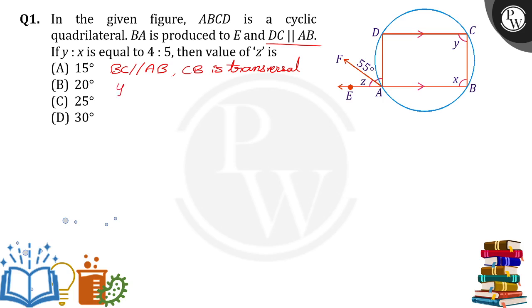So what can we say? Y plus X equals 180 degrees because they are co-interior angles. Here Y:X is given as 4:5, so let Y equal 4P and X equal 5P.